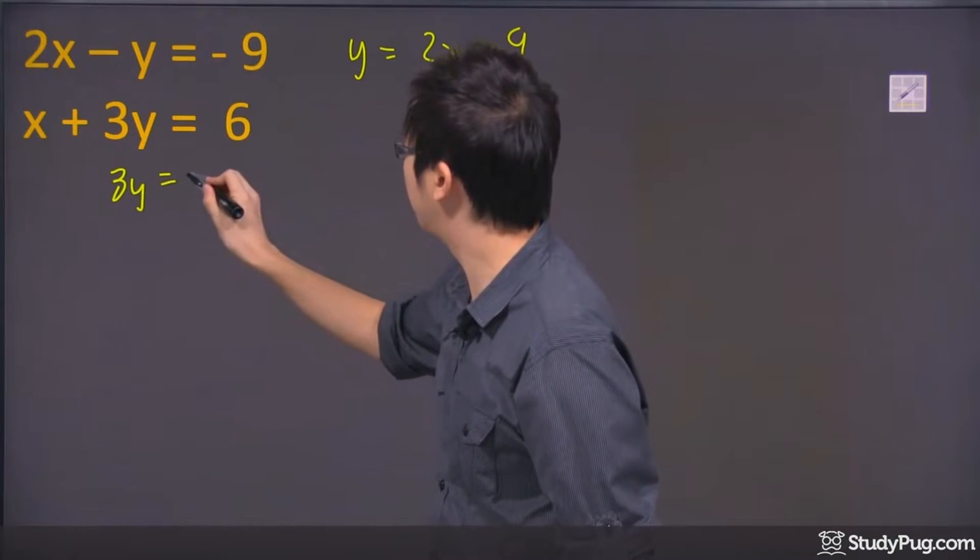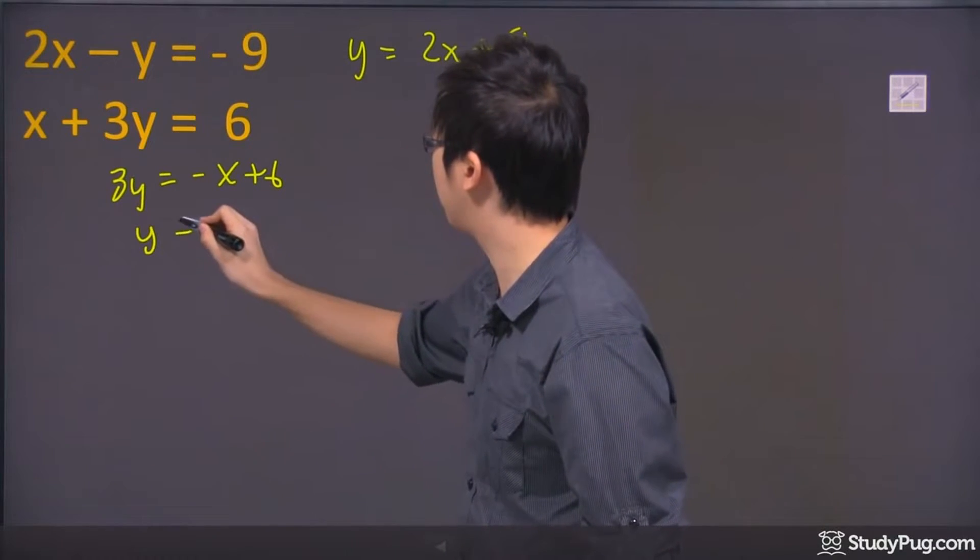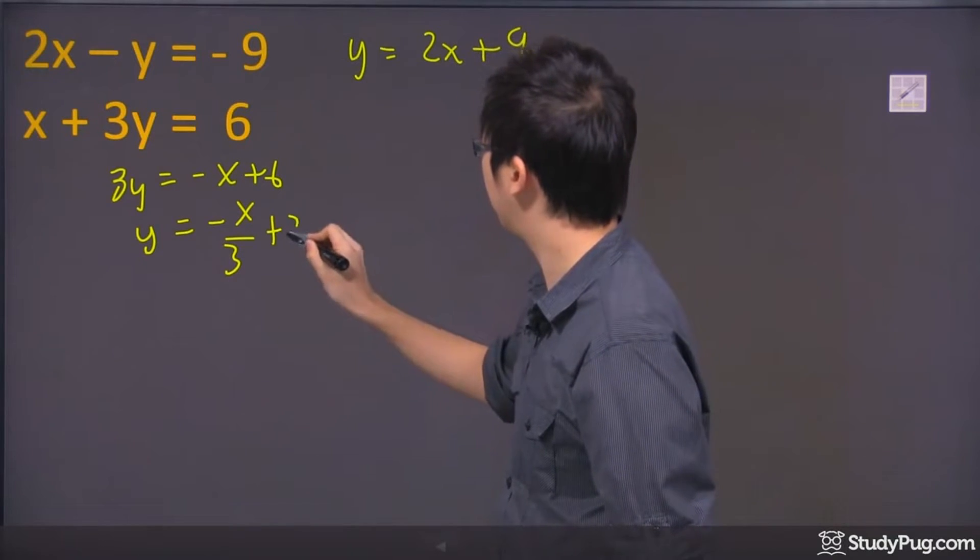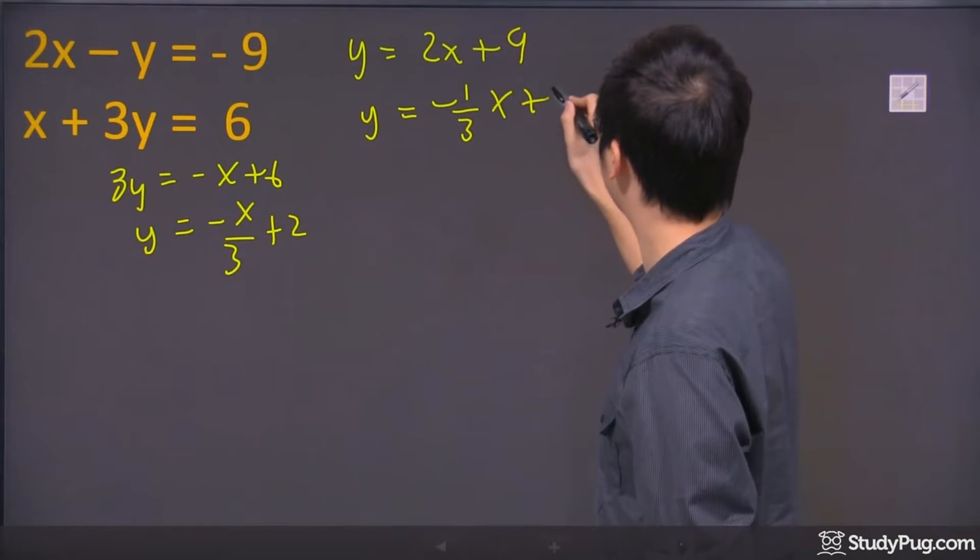Let me do a little work here on the second equation. I'm going to move the x over and divide everything by 3. So my second equation is y = -1/3x + 2.